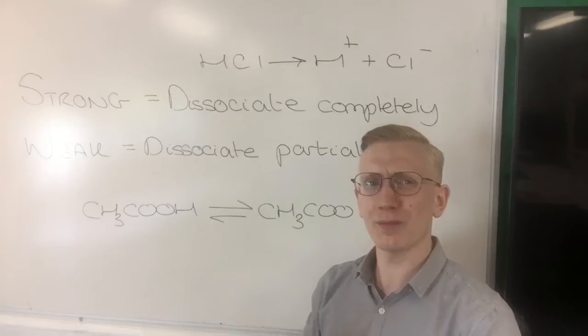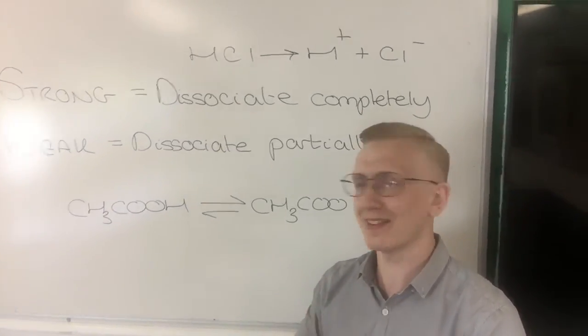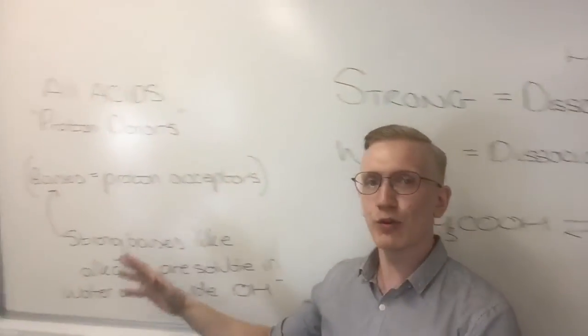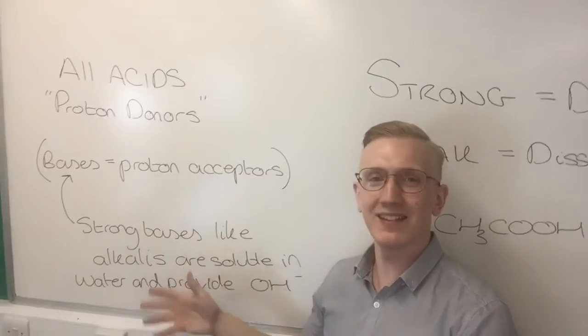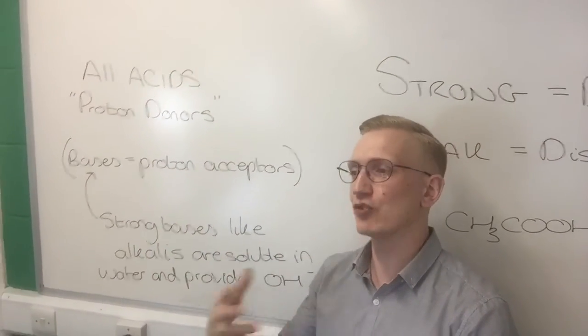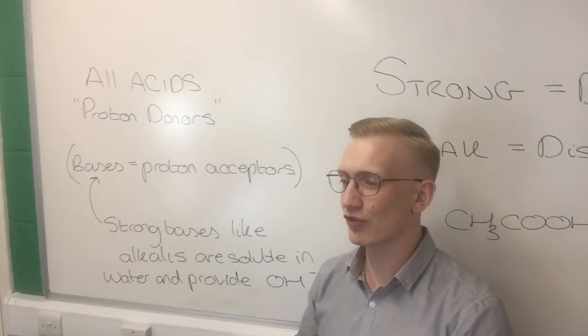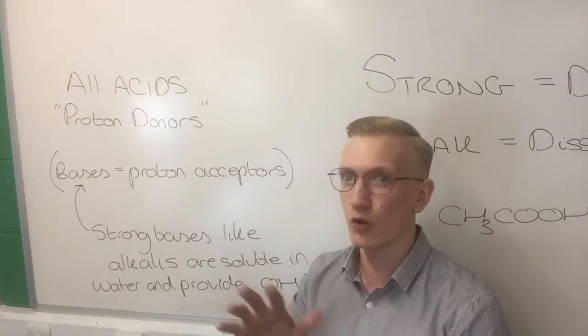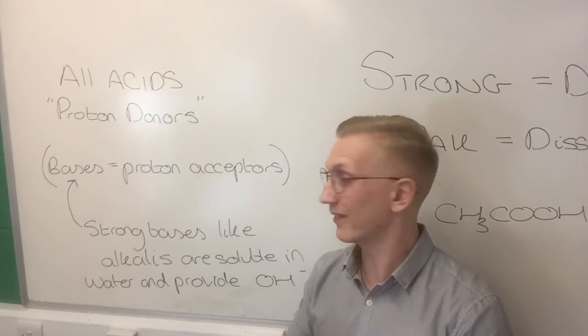Now, you do need to actually know as well some examples of strong and weak bases. If you're looking at strong bases, these are like alkalis. So, anything with hydroxide in the name, like sodium hydroxide or barium hydroxide, different formula but still, that's going to be a strong base.